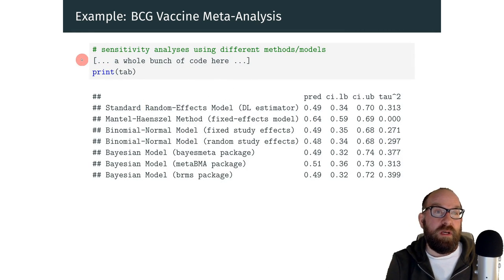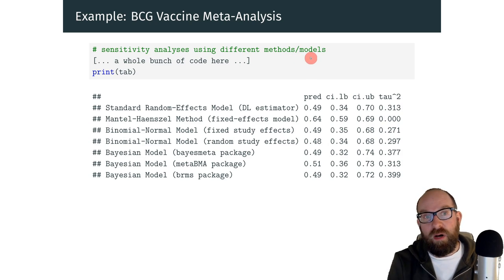In addition, we could conduct a bunch of sensitivity analyses to see how robust the results and conclusions are when we switch to a different method or model for meta-analyzing these data. So down here, you have the results from the standard random effects model, but we could switch to a fixed effects model, or maybe use a so-called binomial-normal model and different types of those, or maybe one of several different Bayesian models to analyze these data.